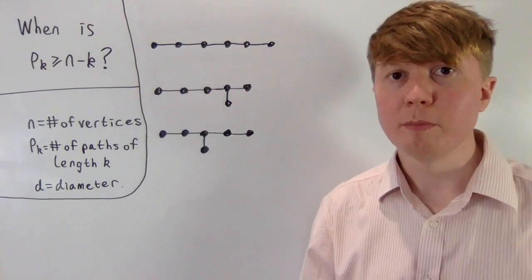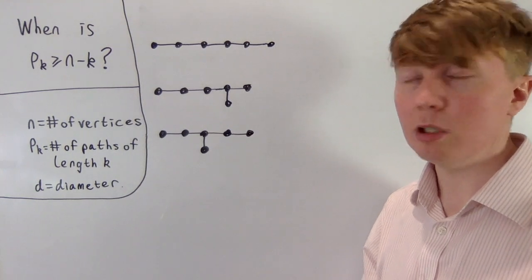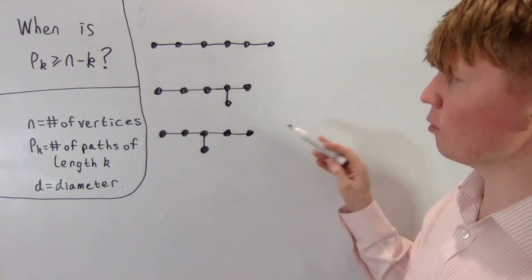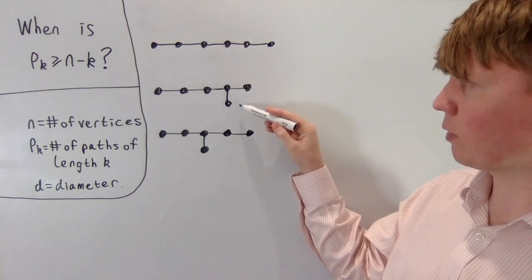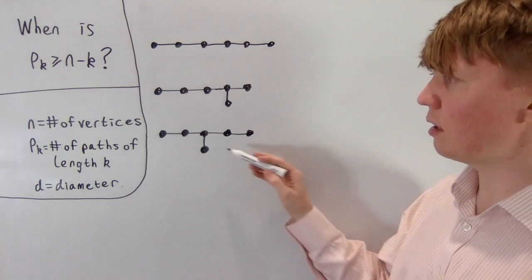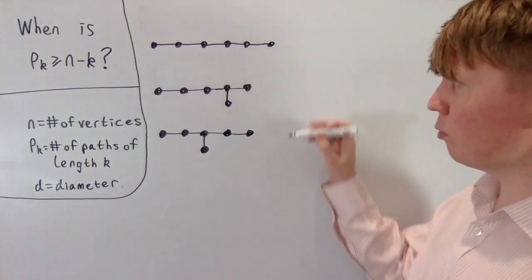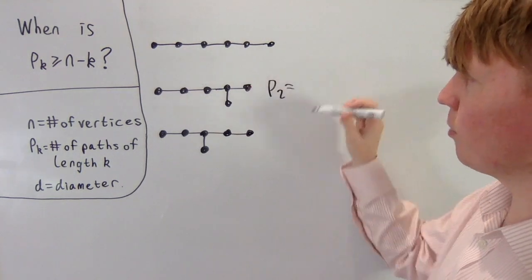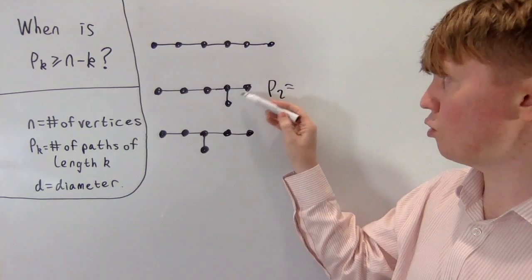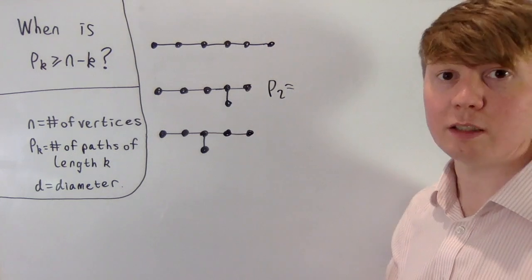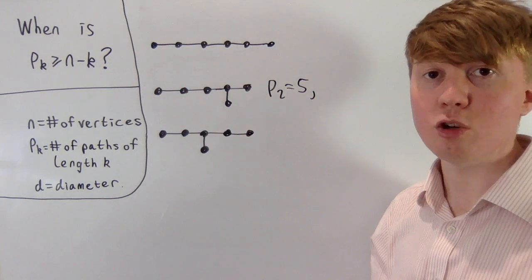Looking at examples with n=6 to build intuition, we have different tree configurations. For the first non-linear example, p2 — the number of paths of length 2 — gives 3 as part of the main path plus another 2 paths using the vertex at the bottom. So p2 is 5, which is bigger than n−k = 6−2 = 4.